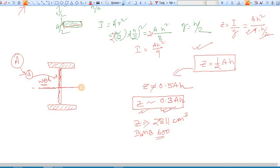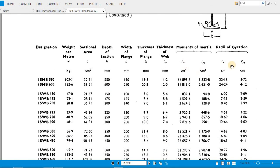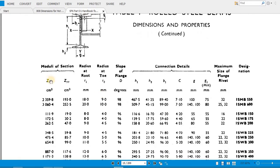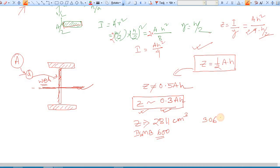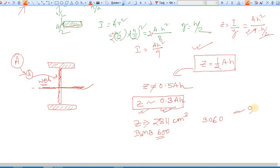Here I value is given, R value is given. So in the next page, there should be Z value. So here is the Zₓₓ. XX means this axis, major axis. So it is given as 3060. What is the accuracy of our theory? So it is 2811 divided by 3060, so it is almost 92% accurate.